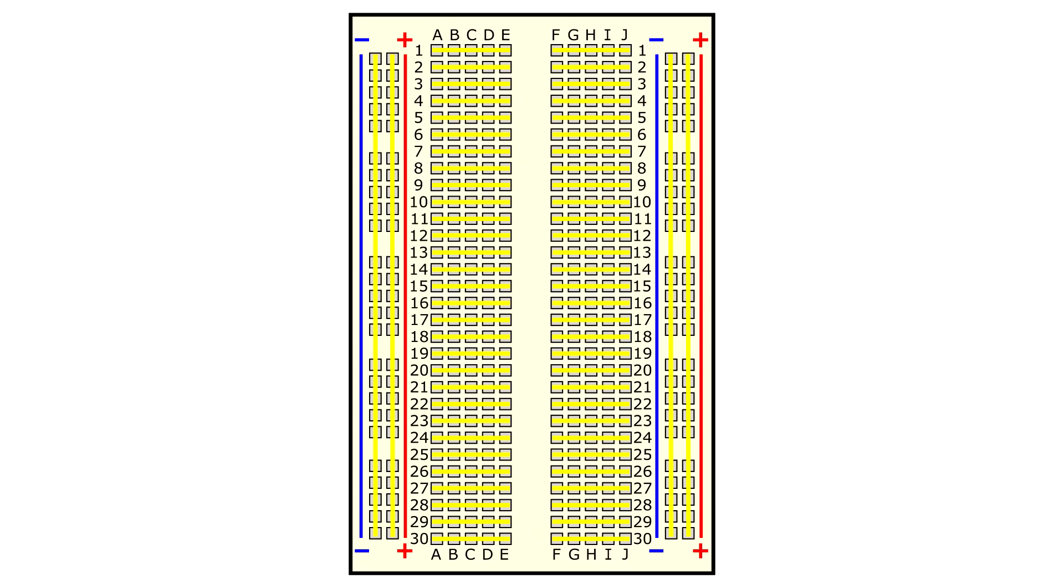This diagram shows all of the connections on the breadboard highlighted with yellow lines. Each set of five holes forming half a row, that's those on the left in columns A through E, and those on the right in columns F through J, is electrically connected. The power buses run vertically on the sides of the breadboard and are typically connected over more than five holes, although this can vary from breadboard to breadboard. The individual power buses are not connected to each other.